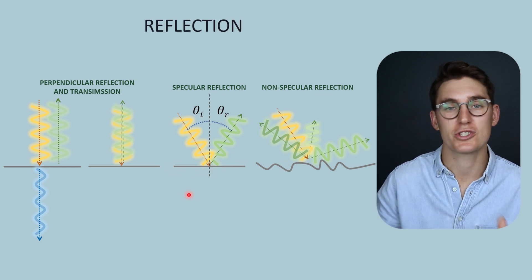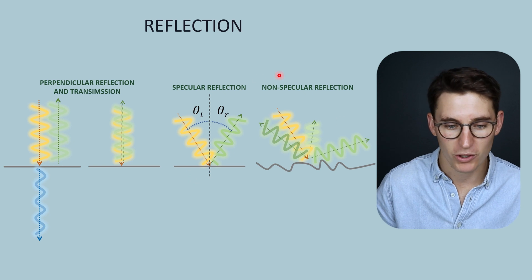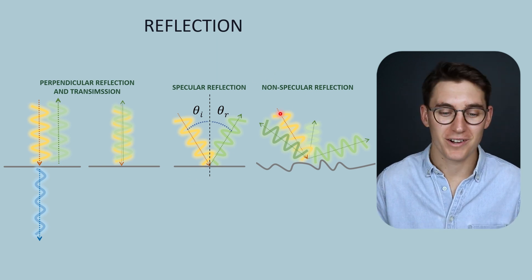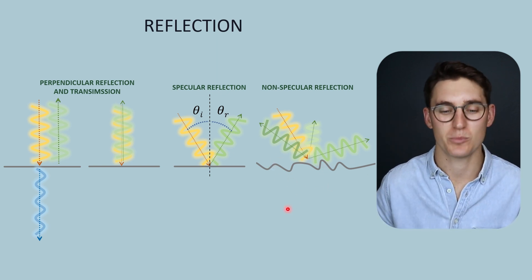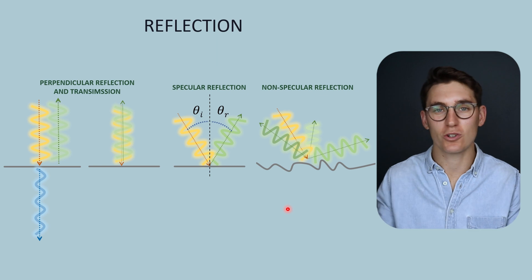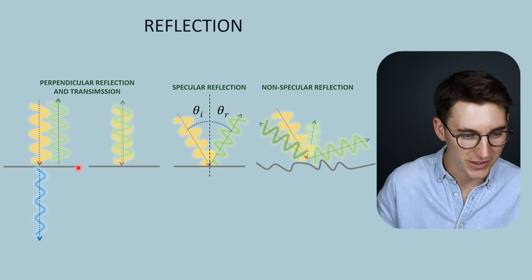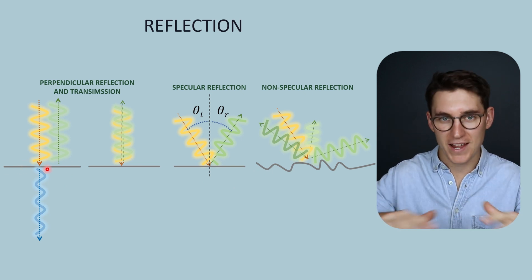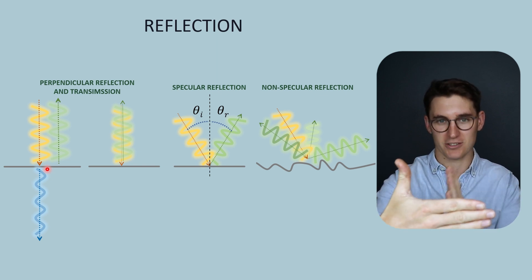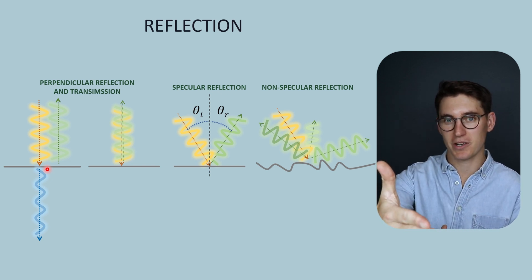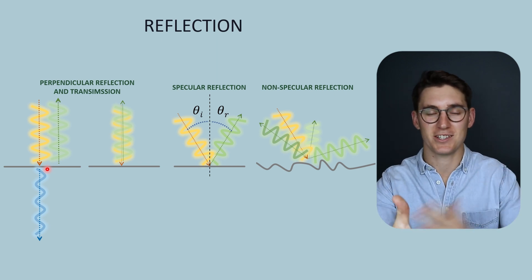Luckily, most of the large smooth surfaces within our body aren't true specular reflectors — they're what's known as non-specular reflectors, where the incident ultrasound beam contacts a tissue boundary that is not perfectly smooth, and that beam is reflected off in multiple different directions. Think of this like a flat mirror: if we want to see ourselves, we need to be perpendicular to that mirror. If we tilt the mirror, we no longer see ourselves — we get light signal from somewhere else in the room.